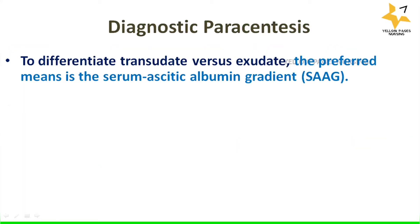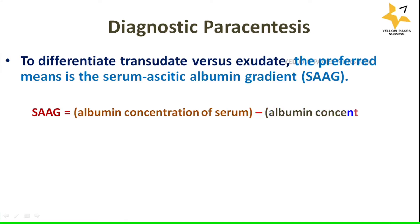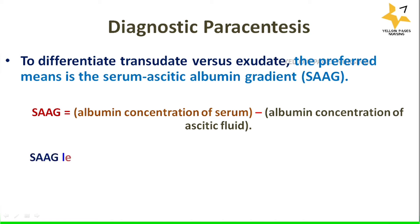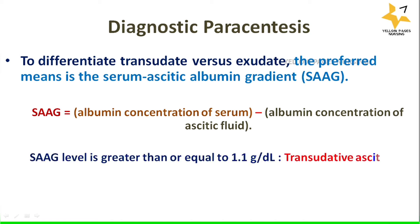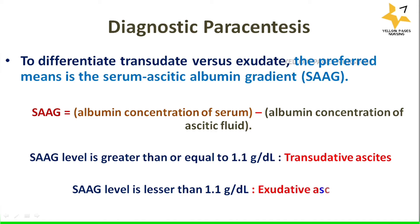The differentiation uses the Serum-Ascites Albumin Gradient (SAAG), calculated using the formula: Albumin concentration of serum minus Albumin concentration of ascitic fluid. If this level is greater than or equal to 1.1 gram per deciliter, it is transudative ascites. If the level is less than 1.1 gram per deciliter, it is exudative ascites. A high gradient of more than 1.1 gram per deciliter indicates ascites due to portal hypertension.